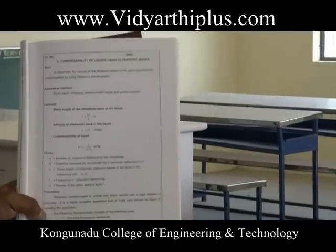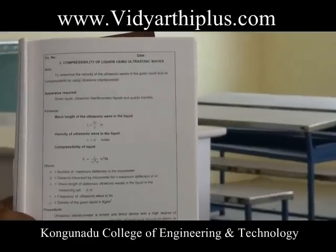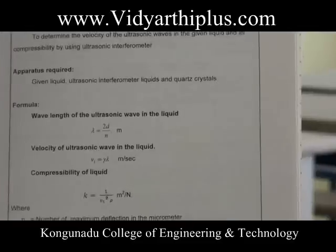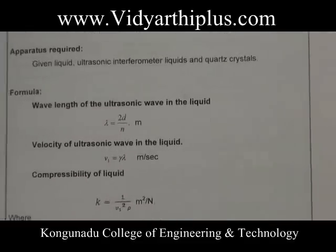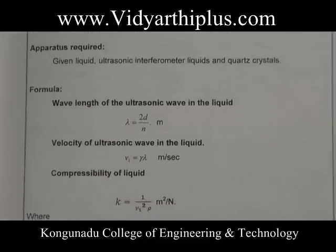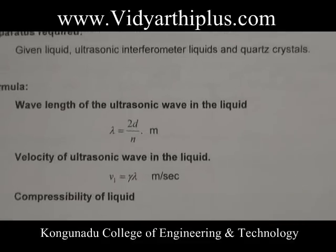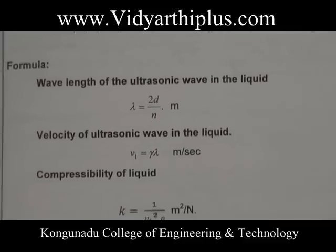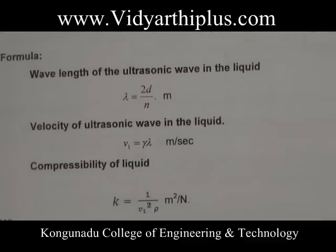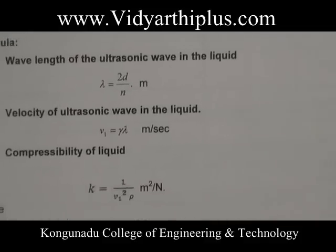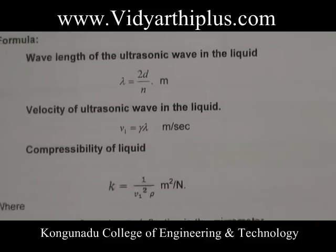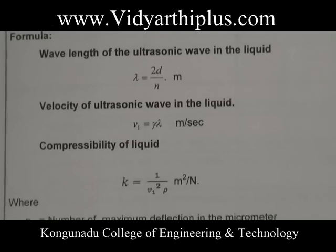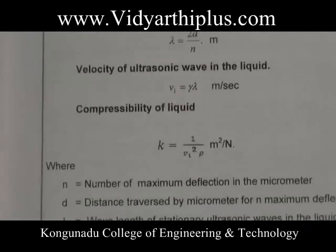The wavelength can be determined by using the top blades. The velocity of ultrasonic sound waves can be determined using the formula v = νλ, where ν is the frequency of ultrasonic sound waves, that is 2 megahertz. The compressibility of the given liquid is k = 1/(v²·ρ), where ρ is the density of the liquid and v is the velocity of ultrasonic sound waves.